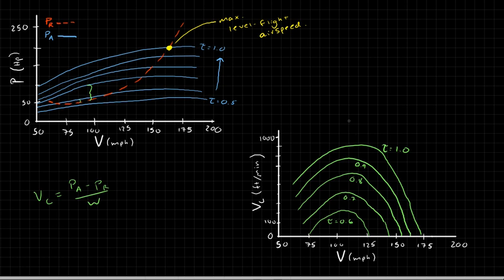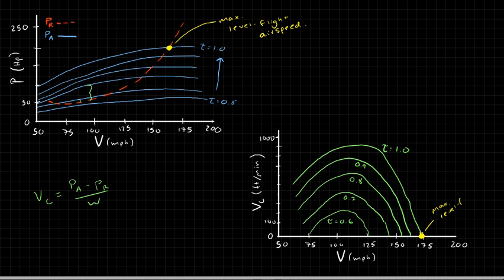We can also look at this on the plot in the bottom right — the rate of climb plot. It's proportional to the difference between the power available and the power required. For a typical general aviation aircraft, there's a point where the rate of climb is zero and you cannot go any higher — that's the max level flight airspeed. Interestingly, there are actually two airspeeds at which you can obtain zero climb rate or level flight.